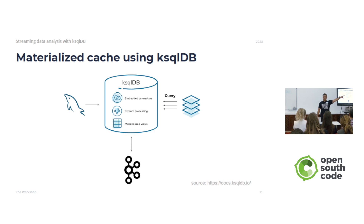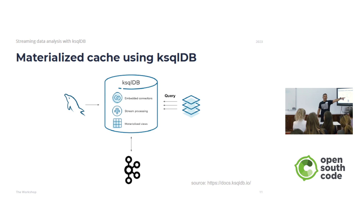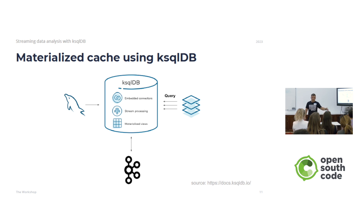Using ksqlDB, you have all the embedded connectors — you can declare connectors directly in ksqlDB, do all the streaming processing using streams and tables, and have your final tables as Materialized Views. You can then serve queries from that Materialized View because ksqlDB offers a REST API.